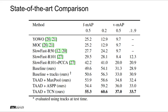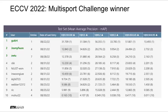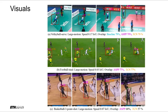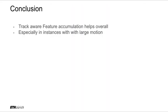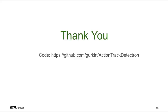Finally, our method outperforms all other state-of-the-art approaches on multi-sports, including last year's challenge winner. We submitted our results to the test server and won this year's challenge comfortably in October 2022. We also observed similar trends in qualitative results. To conclude, our proposed track-aware feature aggregation helps in action detection, especially for instances with large motion.